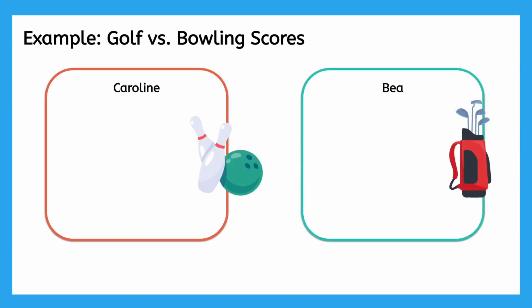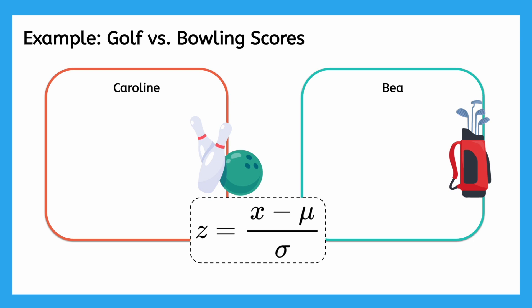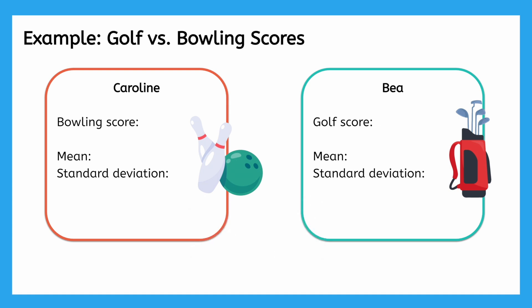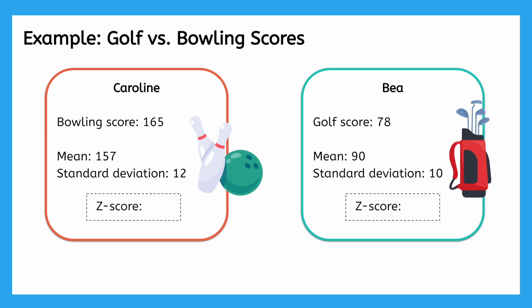So now that we know about z-scores, let's compare our results and find out who is actually better at their sport. What information do we need in order to calculate our z-scores? We'll need our respective scores, the means we are comparing those values to, and the standard deviation. My golf score is 78 strokes, and the scores for this same type of course are normally distributed with a mean of 90 strokes and a standard deviation of 10 strokes. Caroline's bowling score is 165 points, and the scores are normally distributed with a mean score of 157 points and a standard deviation of 12 points. Take a moment and calculate our z-scores on your own.